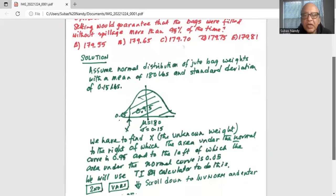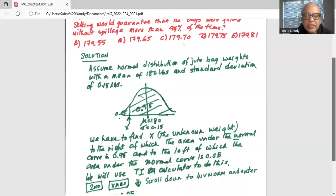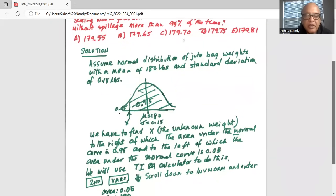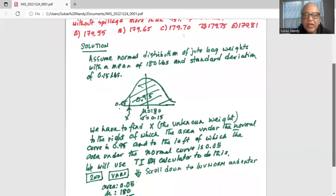So we will use the TI-84 calculator to do this. We will press the second button, then we will press the reverse button, then we will scroll down to invNorm because we have been given the area to the left of the unknown value of the x variable which is 0.05. So when we scroll down to invNorm, then we will hit enter.